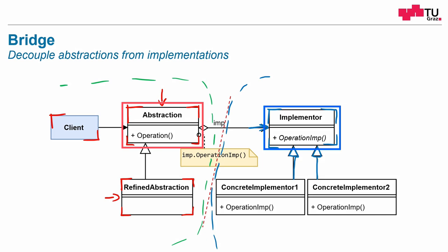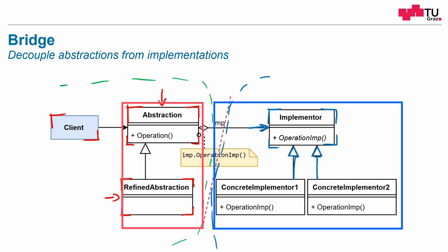This is the idea of the bridge pattern: to have an abstraction layer on both sides of the system — on the implementation side and on the abstraction side. Basically, these are adapters for both sides. And by doing it this way, both sides can evolve independently from each other. And you may ask, where is the bridge here? Here it is.